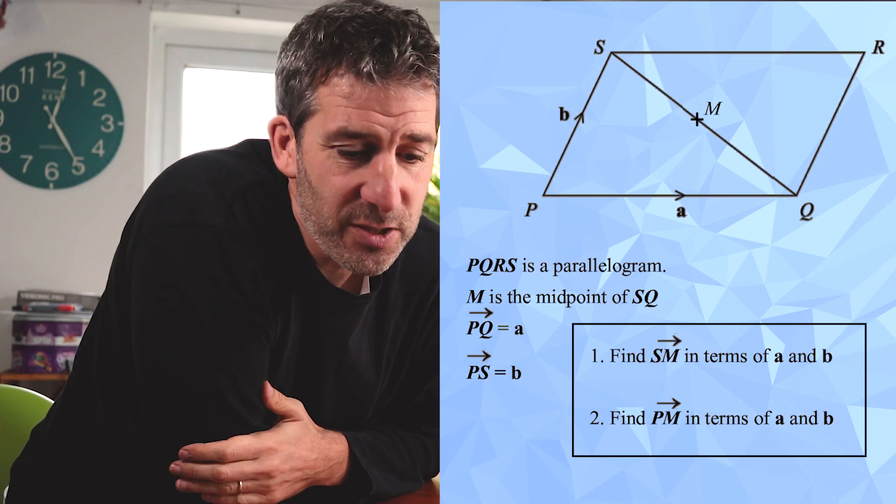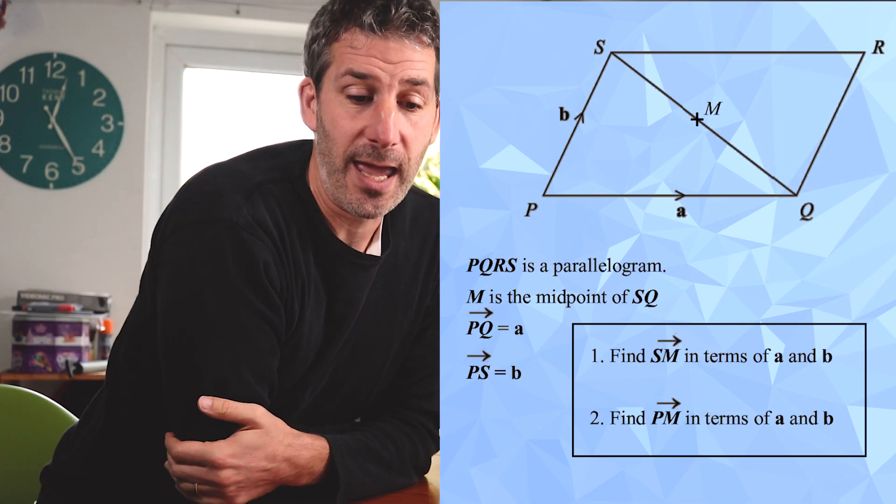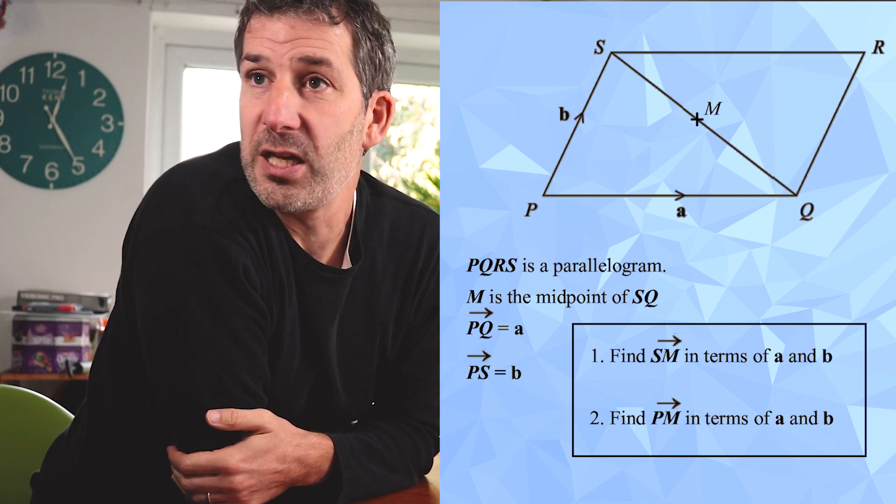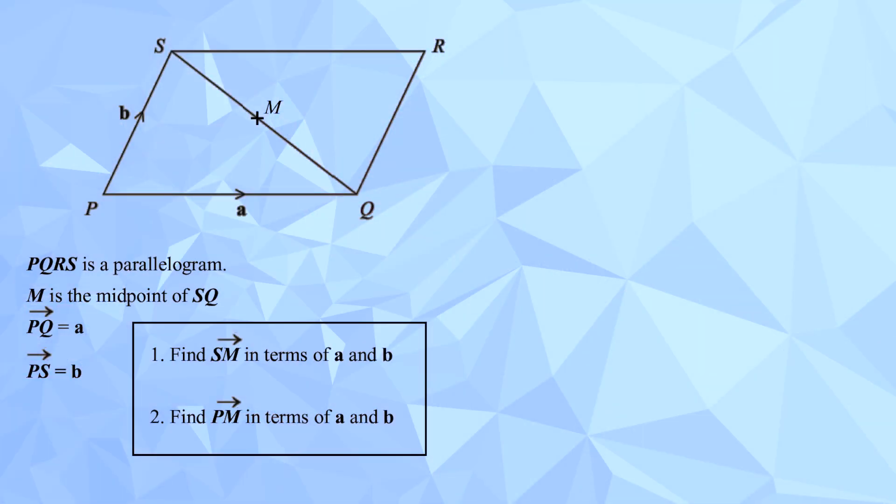And what's the second bit? To find PM, vector PM, or from P to M. So, the easiest way would be to go from P to S. Yeah. So, that would be positive b. Yeah.